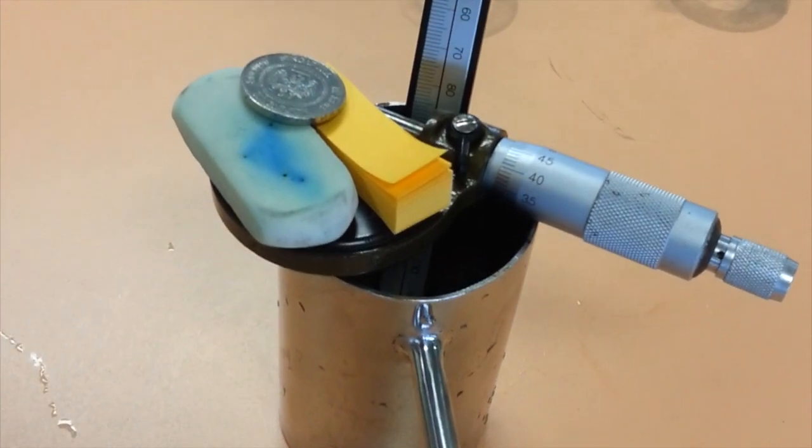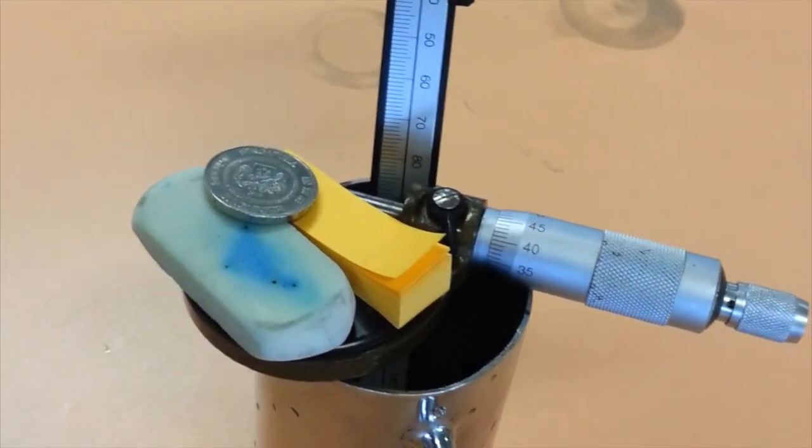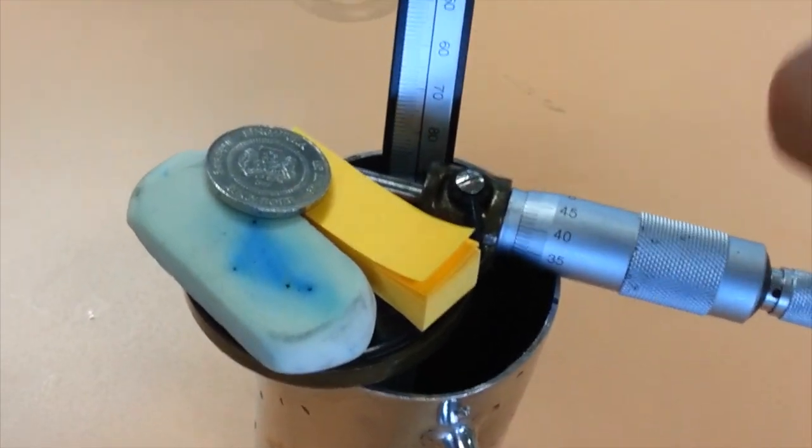This is the end of our tutorial. We hope that you have learned more on how to use the micrometer screw gauge, the vernier caliper, and the Eureka can.